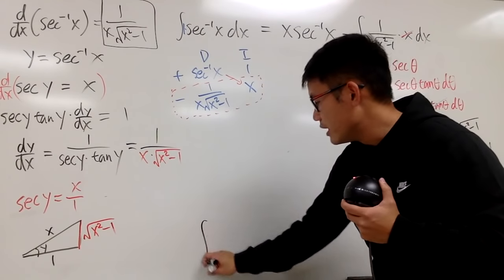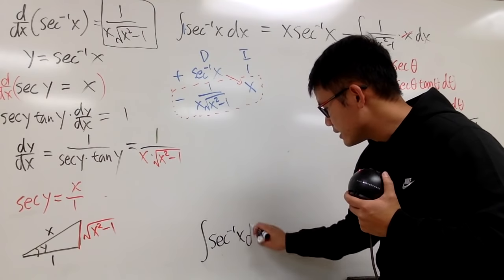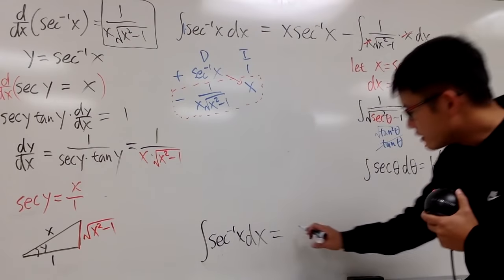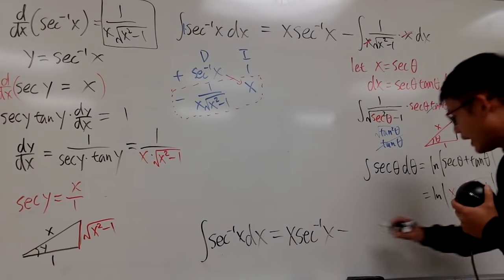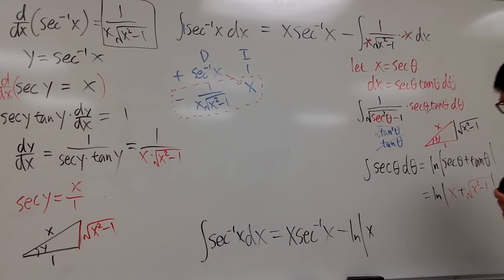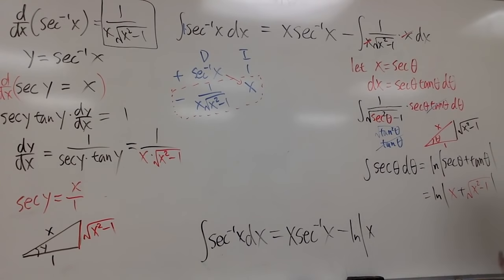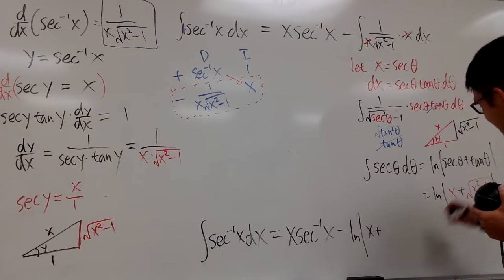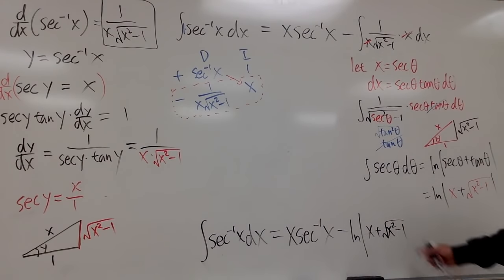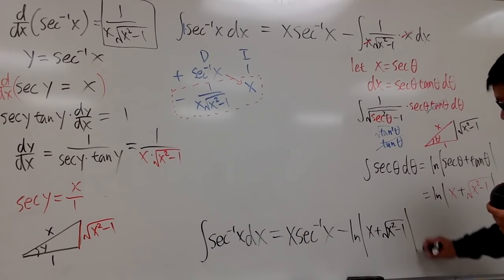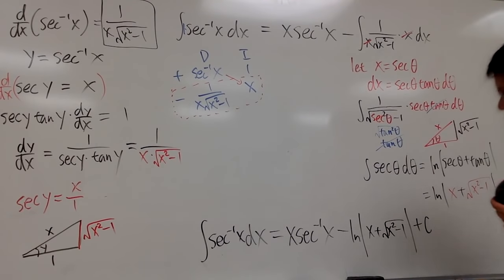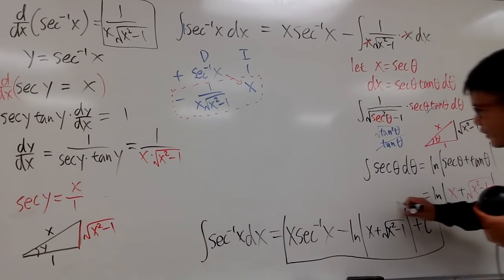So finally, the integral of inverse secant x dx equals x times inverse secant of x, minus ln of the absolute value of x plus the square root of x squared minus 1, plus C. We do keep the absolute value because if x is negative, the inside could be negative since the square root term is smaller than x. This is the answer for the integral of inverse secant x.